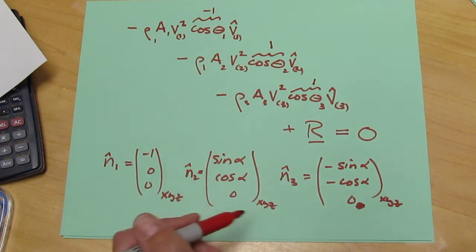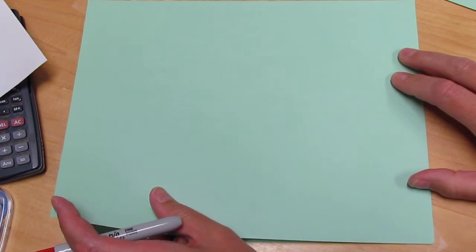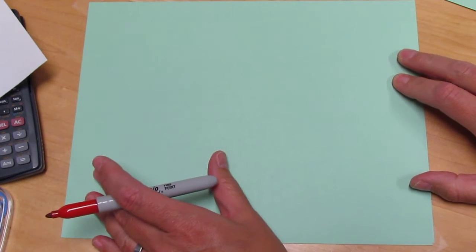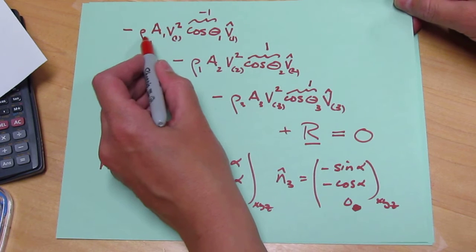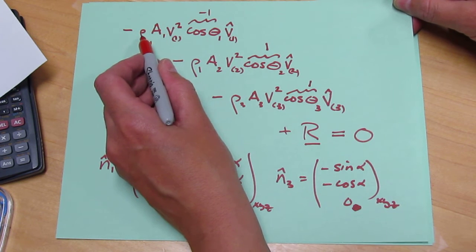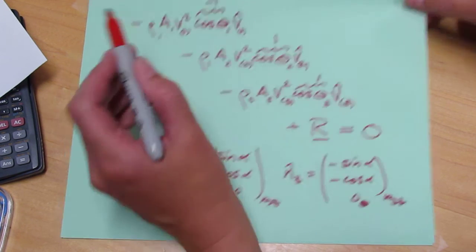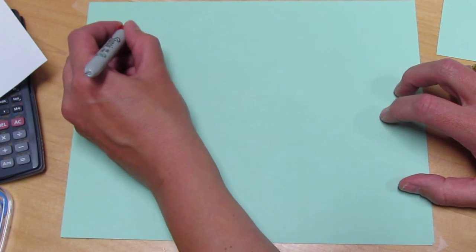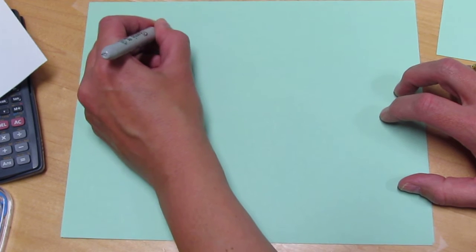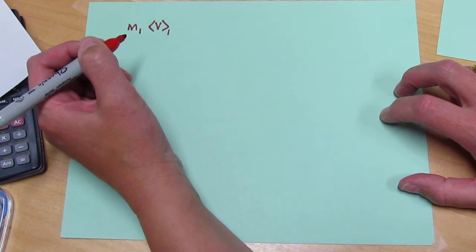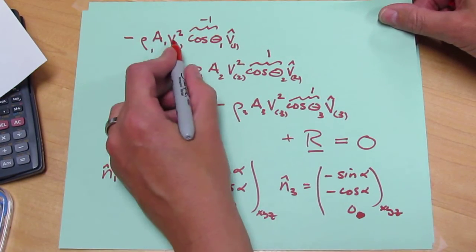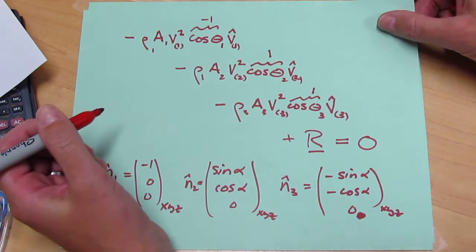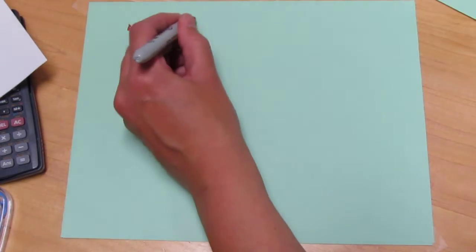With all that information, we can now write the complete macroscopic momentum balance equation. So let's do it. The density is the same throughout. And I'm going to combine rho A V as M. So this will be M1 times V. So I have minus 1 times M1 times V at surface 1. There's minus, minus, M times V, and then times the unit vector at surface 1, which is 1, 0, 0.